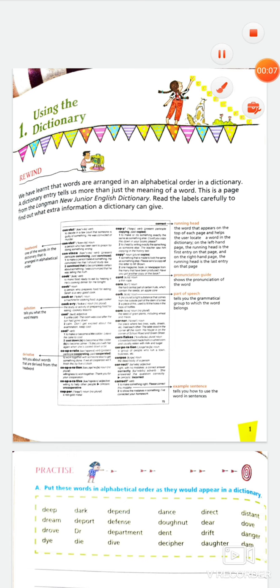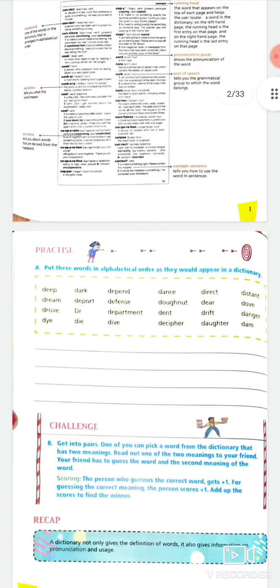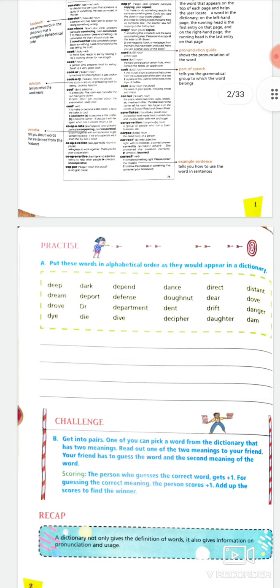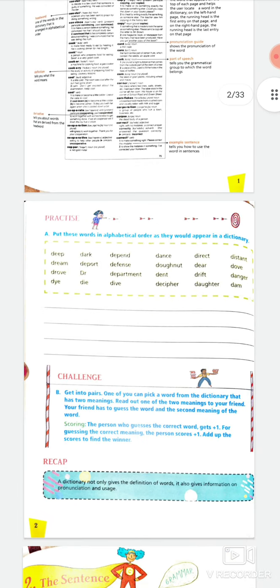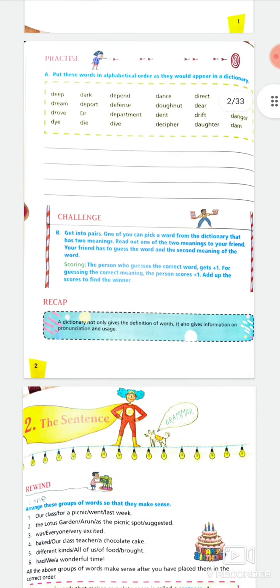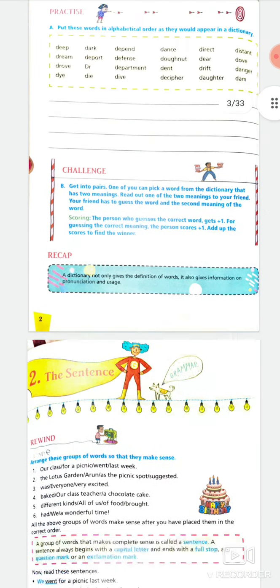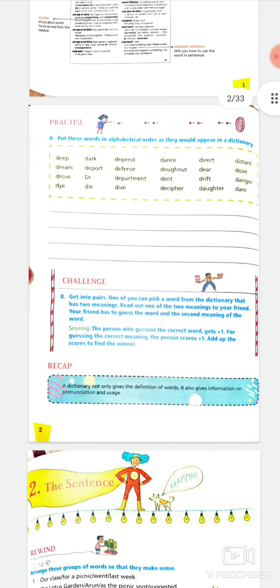Hello Class 5 students. This is a video for your grammar revision. It's chapter number one, using the dictionary, and in this chapter you just have to arrange words alphabetically. We won't take that up as we have already covered it in class.